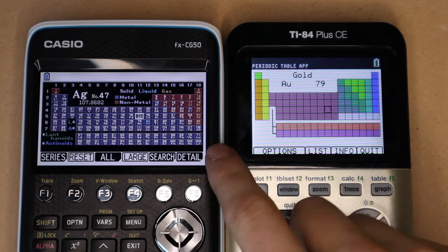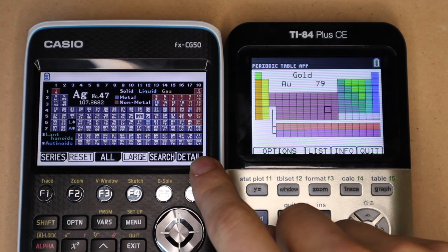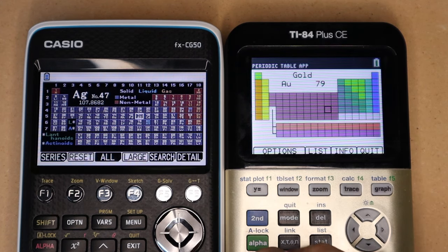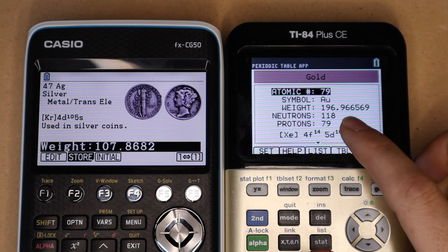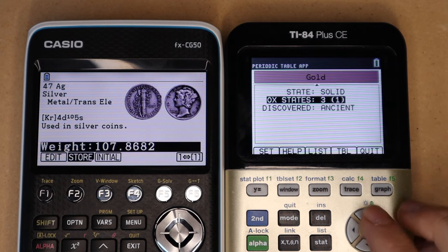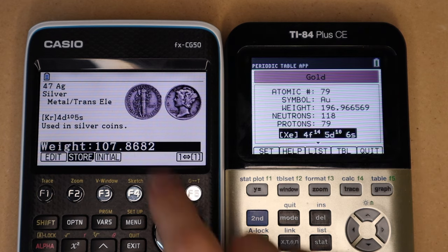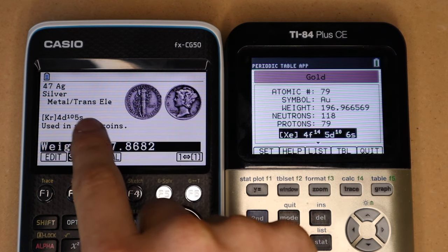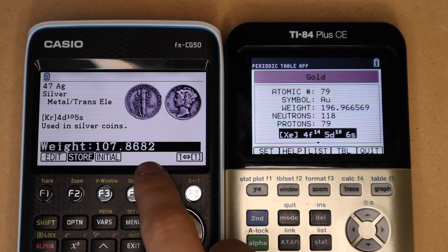Both have full periodic tables. The one on the Casio does look quite a bit more detailed from this view, but once you actually press enter on one of the elements, you can see here that the TI-84 Plus has quite a bit more information about each element, whereas the Casio doesn't have much more than a picture, the electron configuration, and the atomic weight.